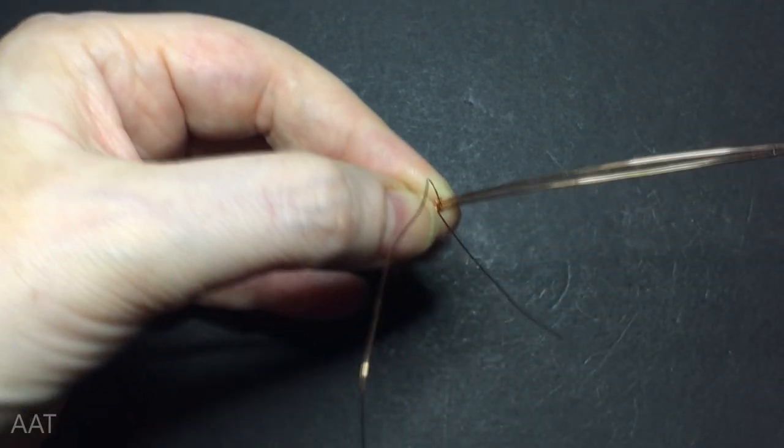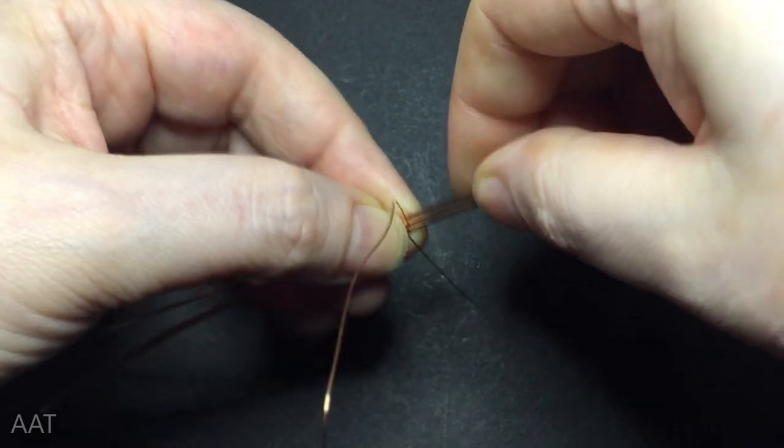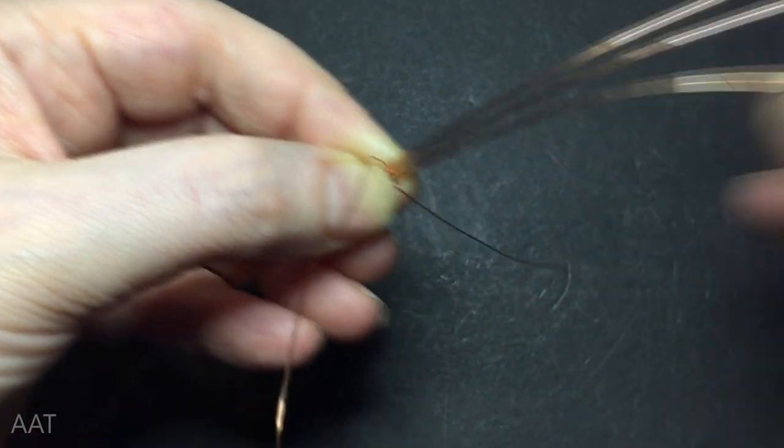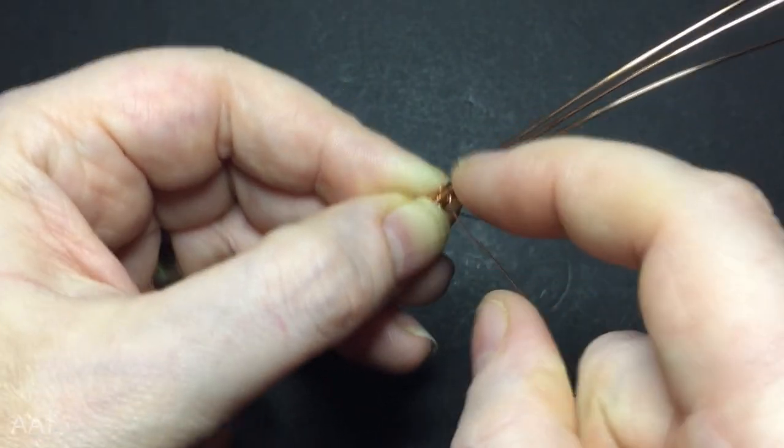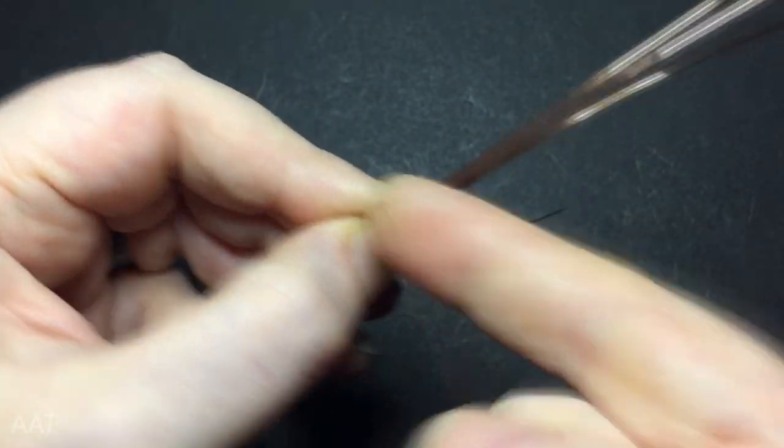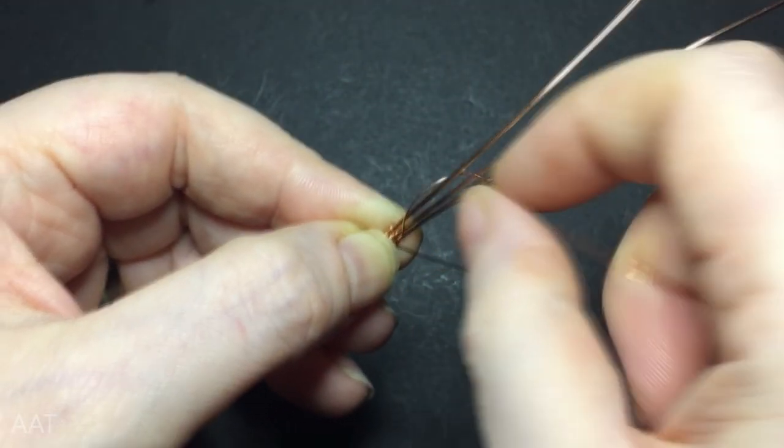Okay, what you're going to need are chain nose pliers, wire cutters, 20 gauge wire, and 28 gauge wire. The S-shaped stone I'm using is approximately 22 millimeters by 14 millimeters. If yours is a different size, you'll have to adjust how much wire you use.